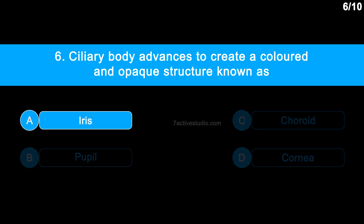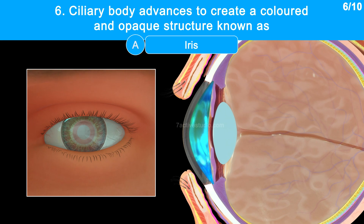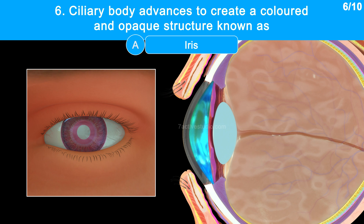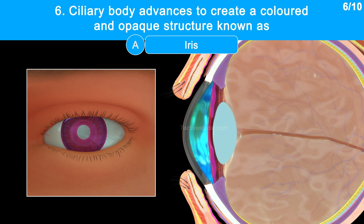The correct answer is option A, iris. The continuation of the ciliary body, the iris is a pigmented and opaque component that encircles the pupil, which is an aperture.